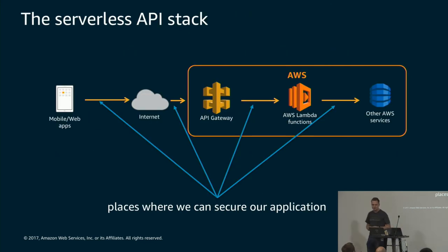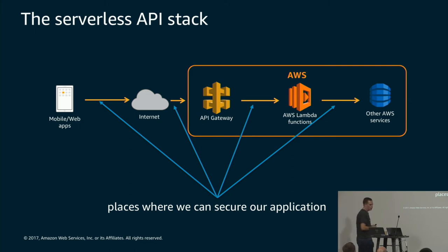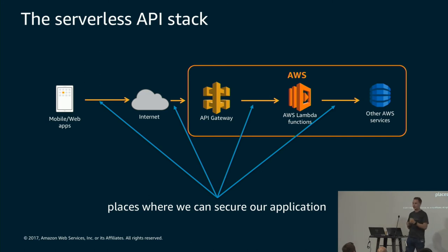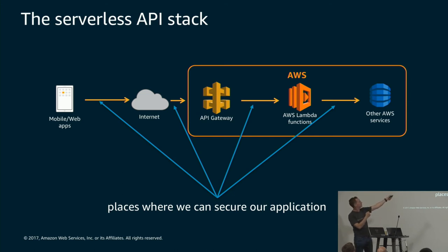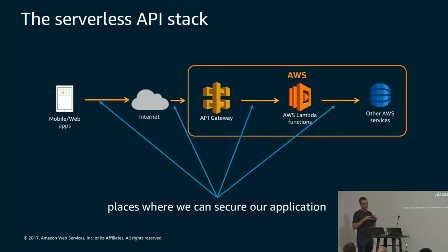Question: between the internet and API Gateway there is an embedded CloudFront — what happens between CloudFront and API Gateway, is it plain text? No, it's not plain text. When you configure a trigger on API Gateway, that integration is managed for you — it's taken care of on the AWS side of the shared responsibility model.